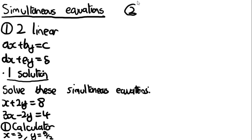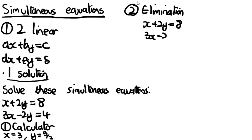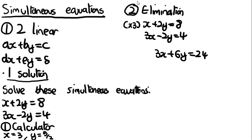The second way is by elimination. I prefer this method because once you do it enough you get really quick at it. The point is to make the coefficients of one variable the same, then subtract the equations. Using the same example, I'm going to multiply the first equation by 3 to get 3x + 6y = 24, and the second stays as 3x − 2y = 4.